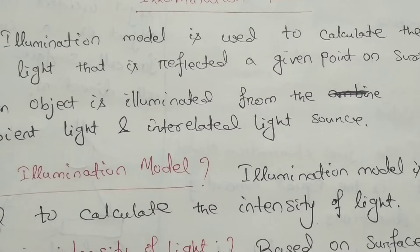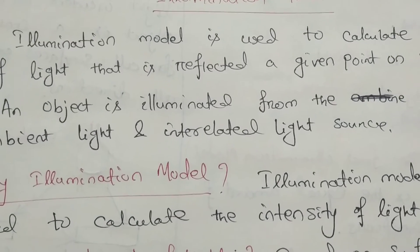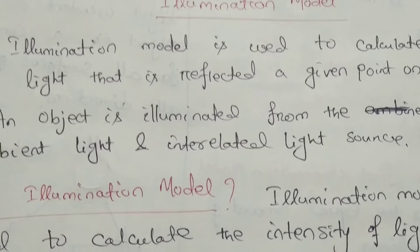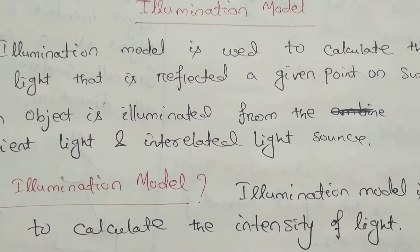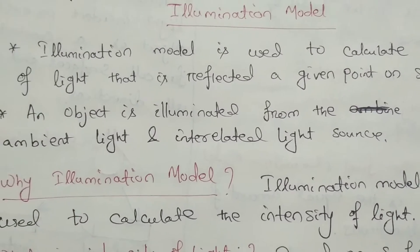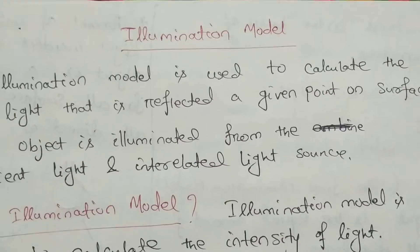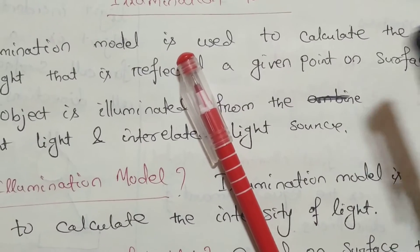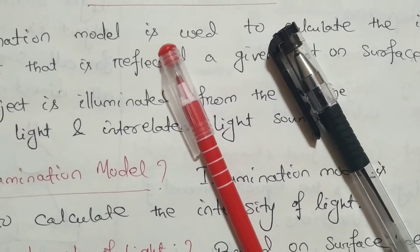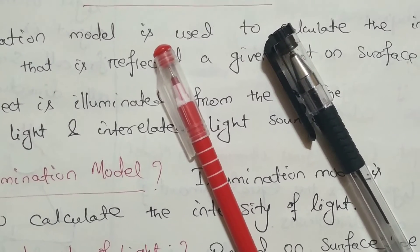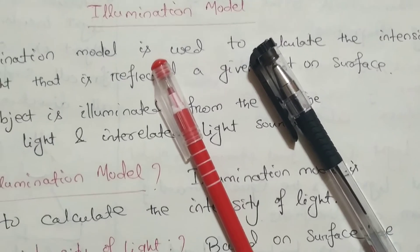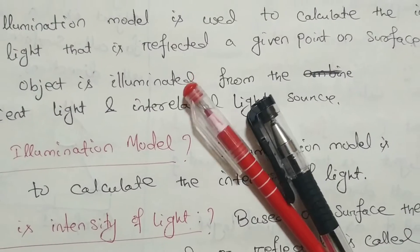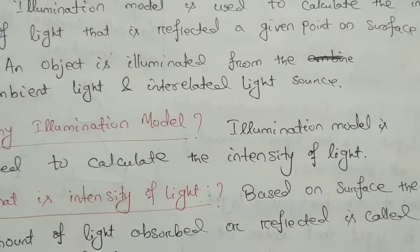An object is illuminated from the ambient light and integrated light source. Ambient light means it is the light that enters into the room or anywhere from all directions. Suppose this is a paper and the light is projected on this paper — this is a pen, this is another pen. Light is illuminated from the object; first it is projected on the object and then it is illuminated. The amount of light that is observed or reflected is called as illumination model.